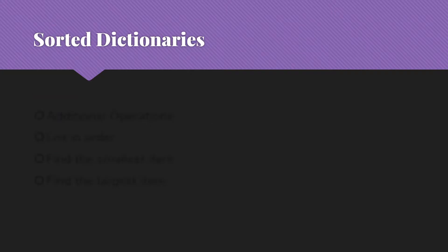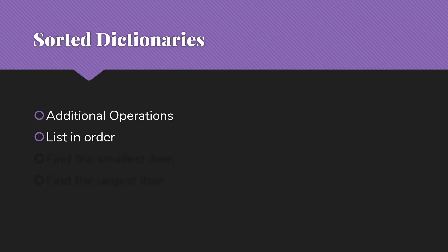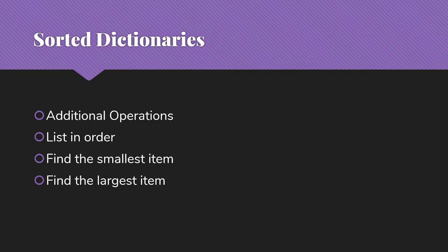Some dictionaries we have sorted so that we have an ordering. Of course, the dictionaries that this concept is based on are all sorted. We can have a few additional operations in that case. One would be to simply list all of the items in order. Another may be to find the smallest item, and another to find the largest item.